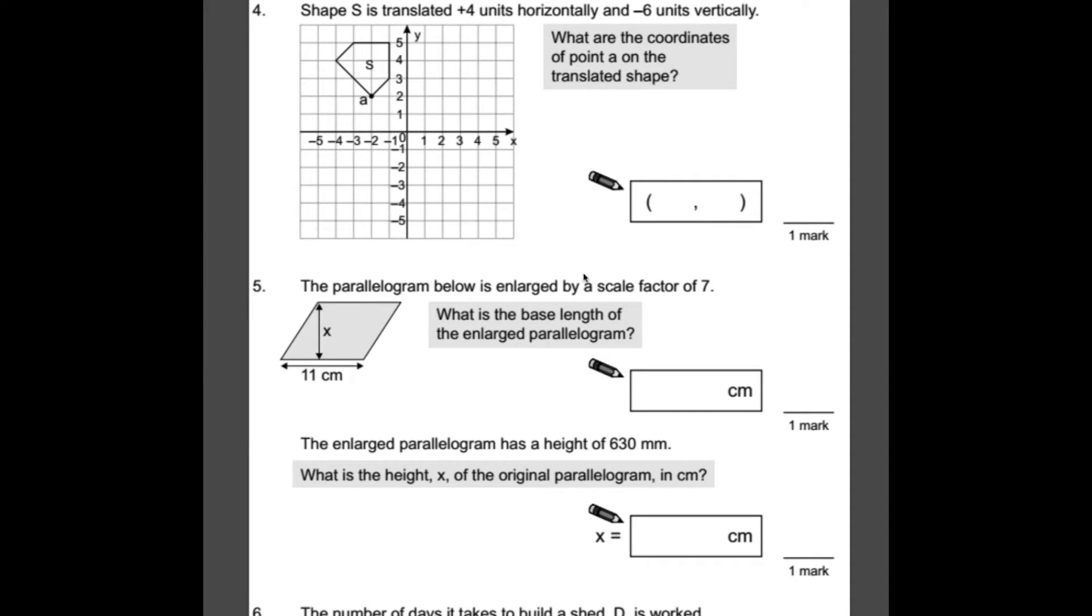Number four, shape S is translated plus 4 units horizontally and minus 6 units vertically. What are the coordinates of point A on the translated shape? So all we need to do here is find point A. Here it is. And at the moment it is minus 2, 2 if we're using the coordinates. And we're going to move it 4 units horizontally. Now we could do that by working out the coordinates or we could just do it visually, which is what I'm going to do.